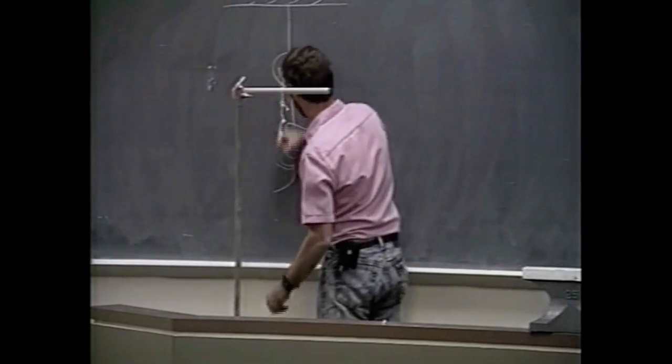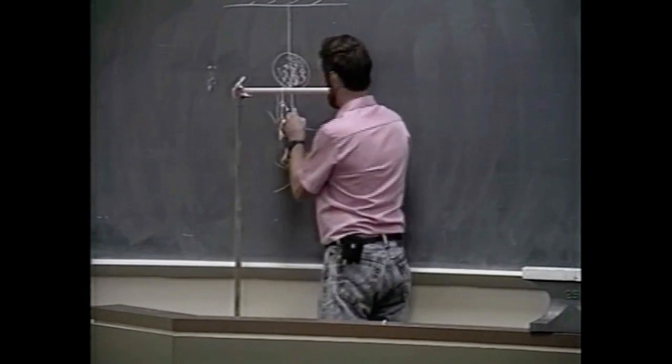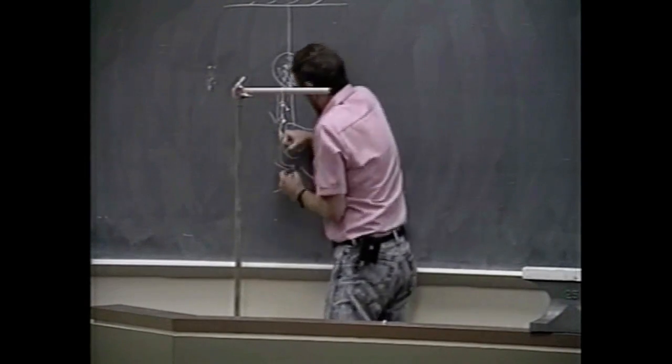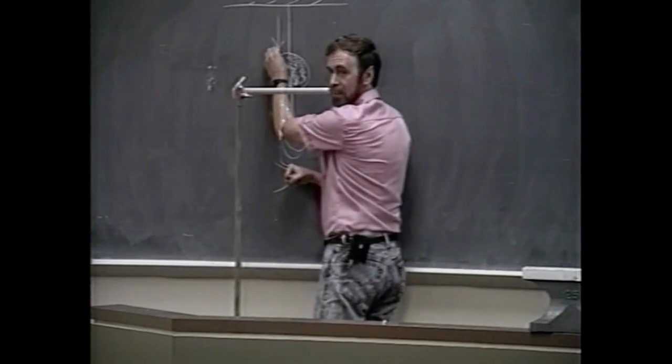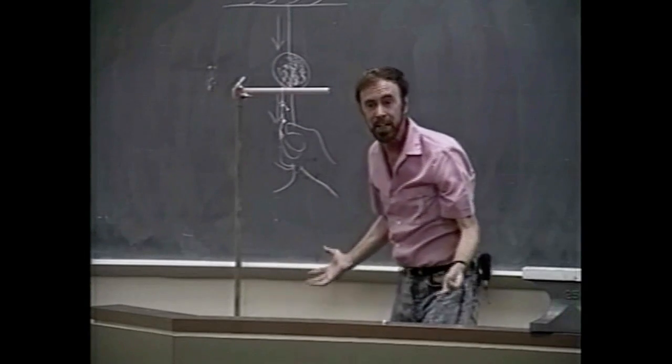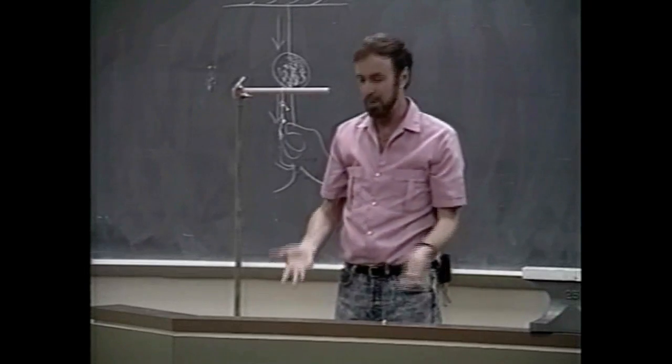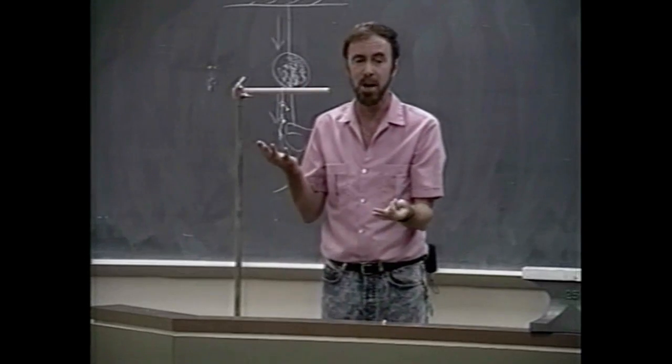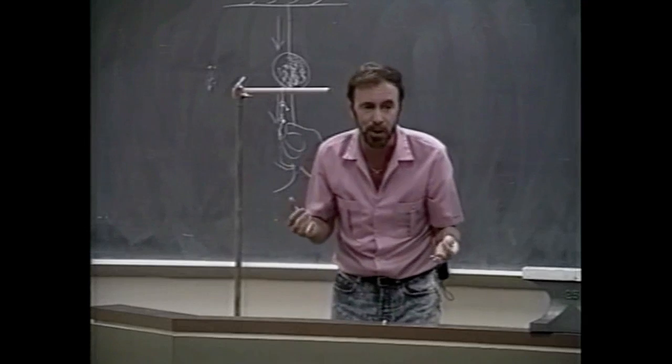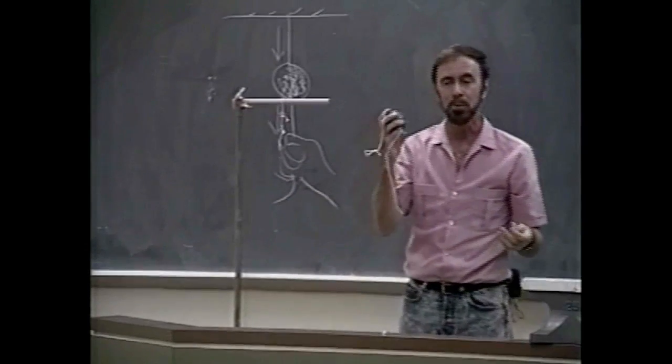When I pull this down, don't I set up a tension in this string here? And doesn't that tension also transmit it up to here? So don't I have that tension in both strings? Isn't that true? So it could be either one. Maybe sometimes it'd be the bottom, maybe sometimes the top.